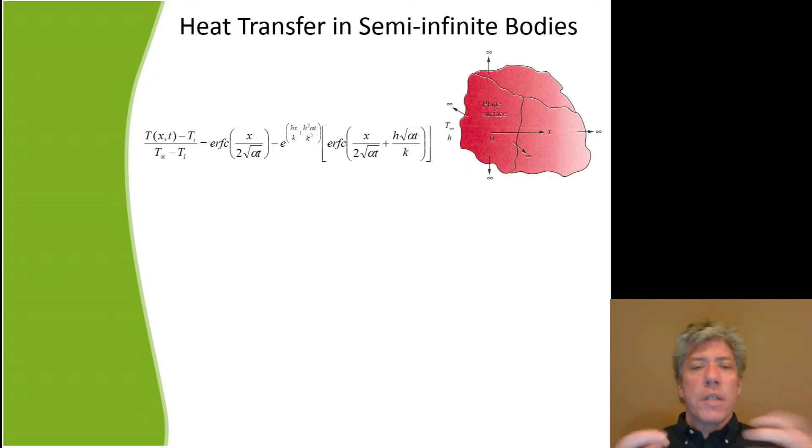It's not so much that these are actually infinite bodies. The point is that there's only a single direction of heat transfer that is normal to the plane's surface. That's the key. That way we only have heat transfer in one direction. We only have one coordinate in one direction.